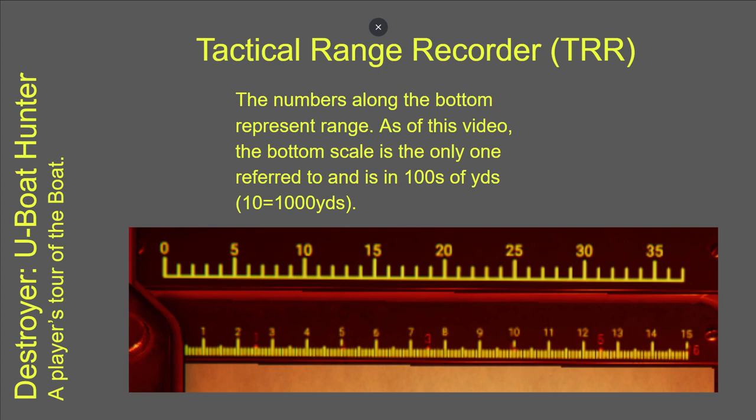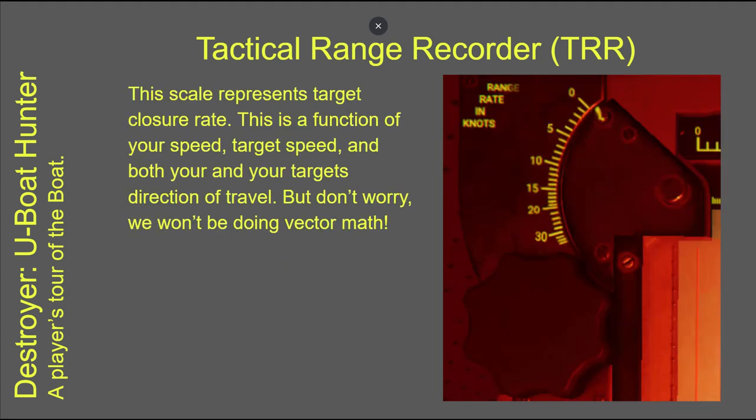This bottom scale represents speed in hundreds of yards, so 10 on that scale is a thousand yards. Last but not least, the last piece of function you need to be aware of is the range rate in knots — this is another way of saying the rate of closure, in other words how fast you are closing in on the target. This is used to calculate when to do the target drop, but don't worry — we're not going to be doing vector math. The analog computer does that for us.